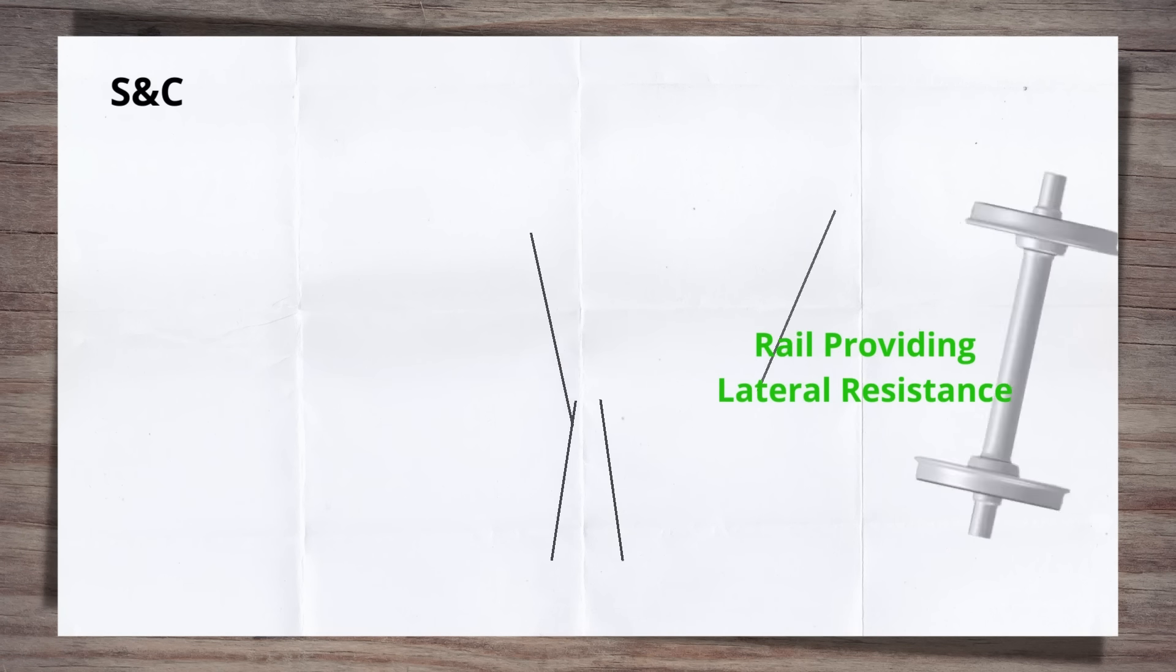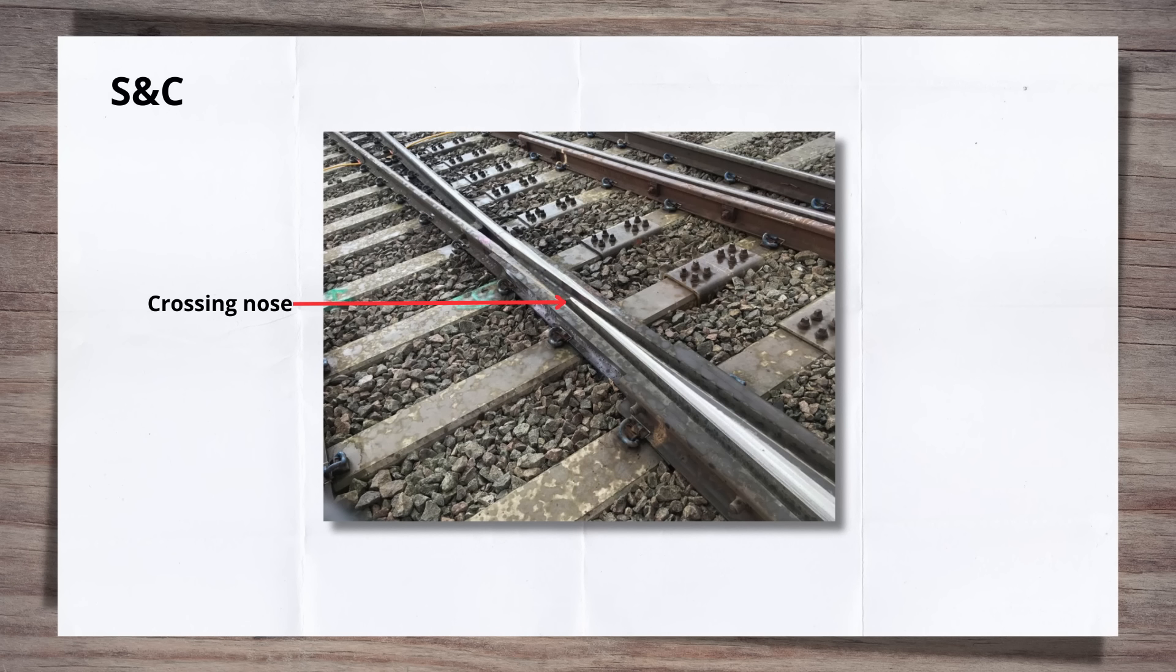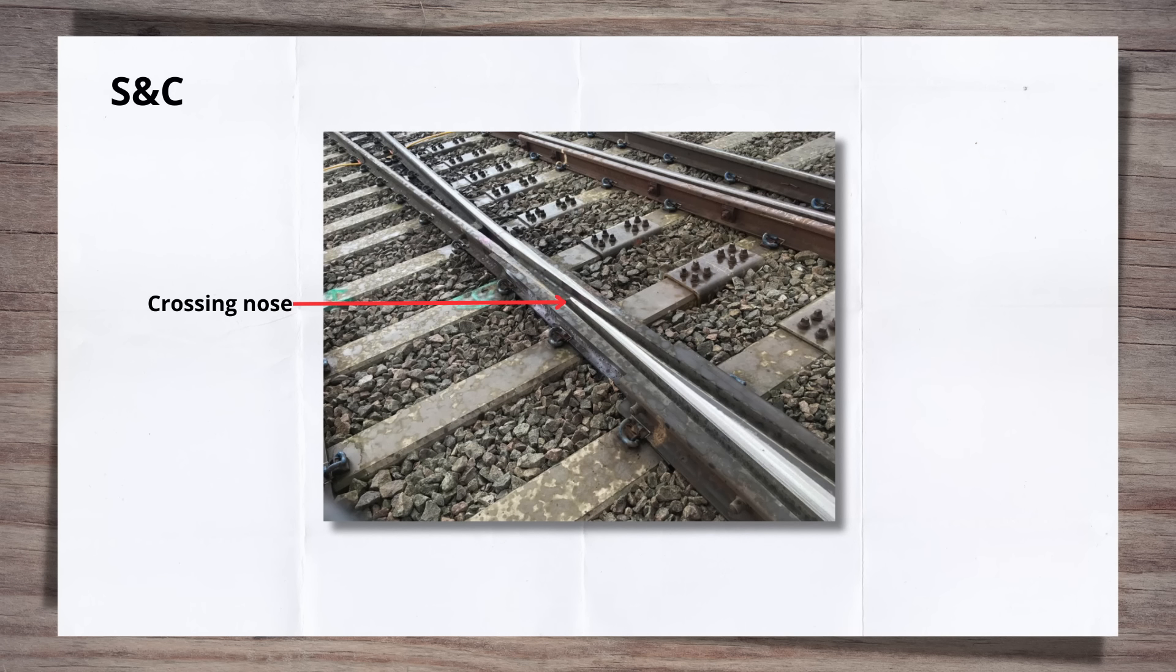By limiting this lateral movement, the checkrail also protects the nose of the crossing from wear and batter, as it has a tapered and thinning section towards its tip. The nose is very susceptible to damage, which requires repair. This is a common maintenance defect picked up on routine inspections of the crossings.